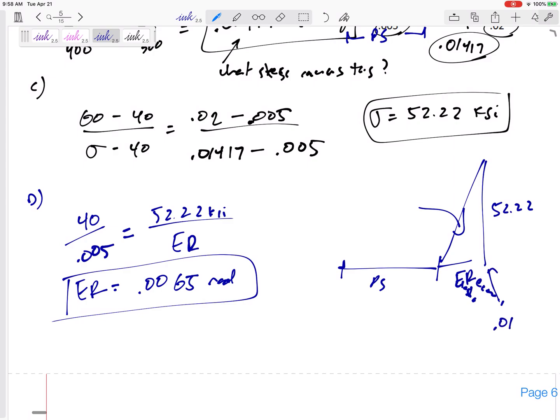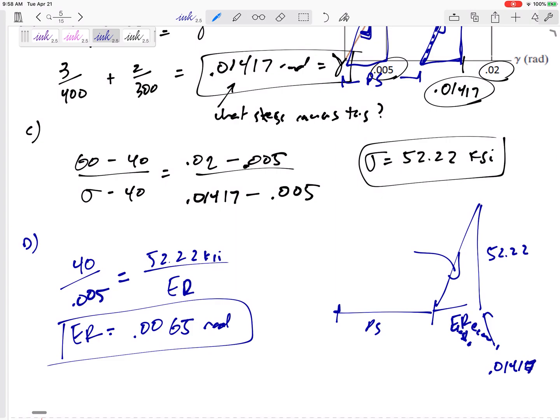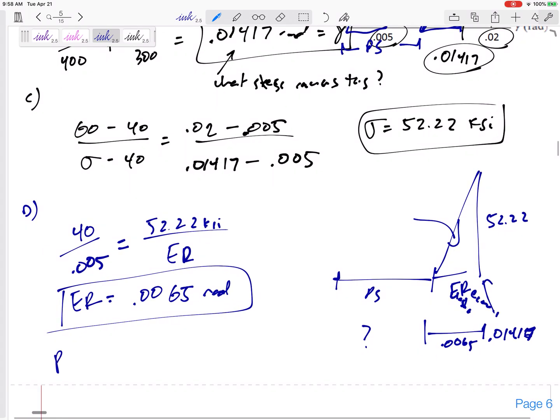How much is it permanently deformed? Well, I was over here at 0.01417. I was over here at 0.01417 and I bounced back by 0.0065. So where am I left? What am I left with? 0.01417 minus 0.0065. So I still have a deformation of 0.0077 radians. So my permanent set, 0.0077 radians.